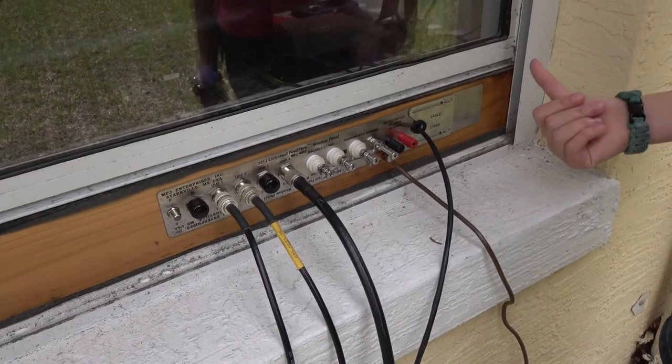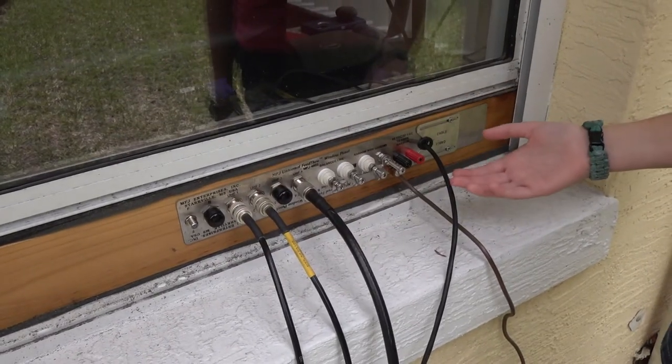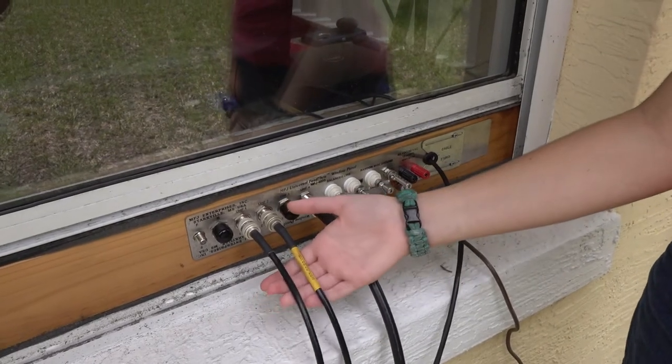So after that we spray painted it to make it less likely to splinter, put all the connectors back in where they're supposed to be and then attached our ground, rotor cable, VHF UHF antenna, and two of our three HF antennas.